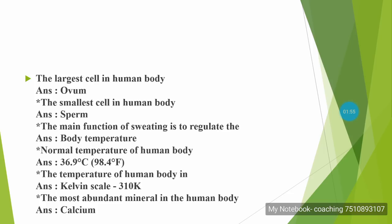The temperature of the human body on the Kelvin scale is 310 Kelvin, and in Fahrenheit it is 98.4 degrees. The most abundant mineral in the human body is calcium.